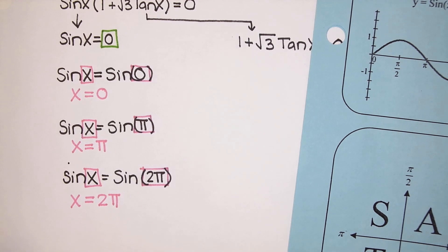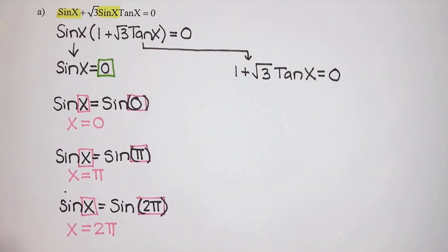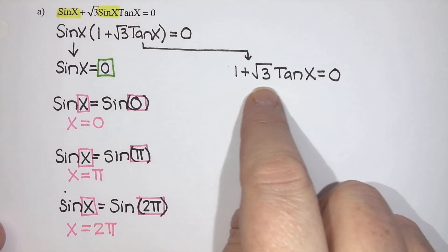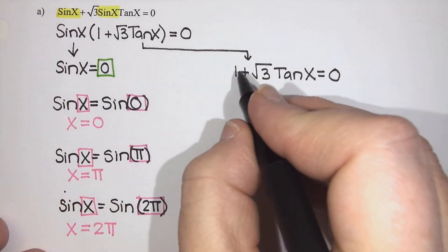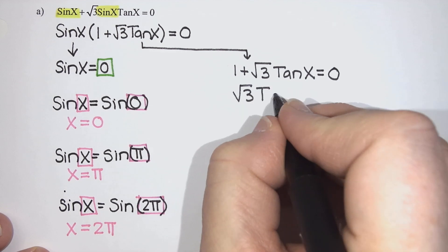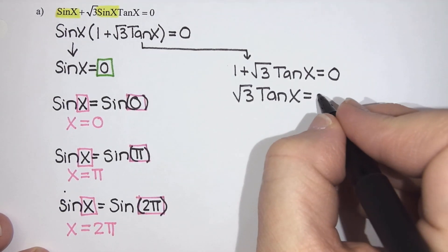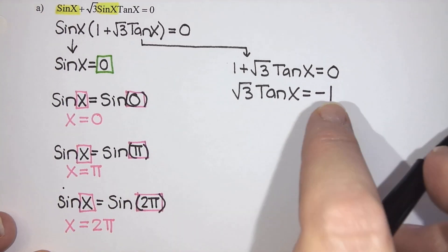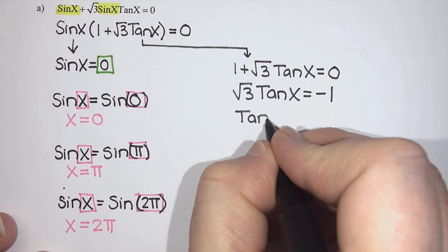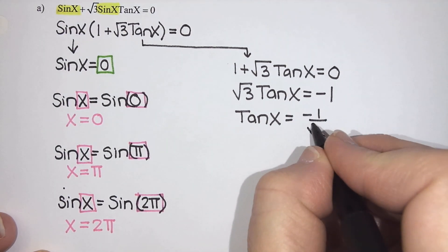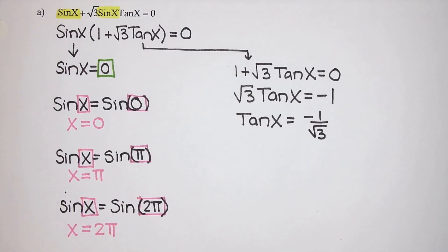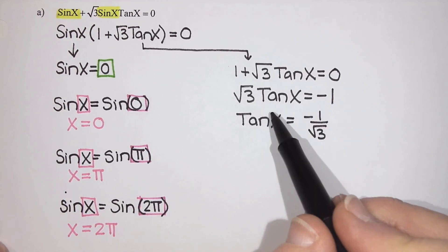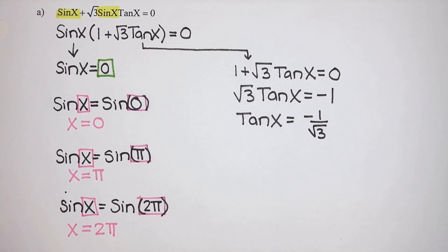We're going to take a look at the next one. The other bracket was 1 + √3·tan(x) = 0. For this one, I need to rearrange and figure out what tan(x) actually equals. So I'm going to subtract one from both sides to get √3·tan(x) = -1. Then I'm going to divide both sides by √3. So I'm going to get tan(x) = -1/√3. And I've got the tan(x) by itself.